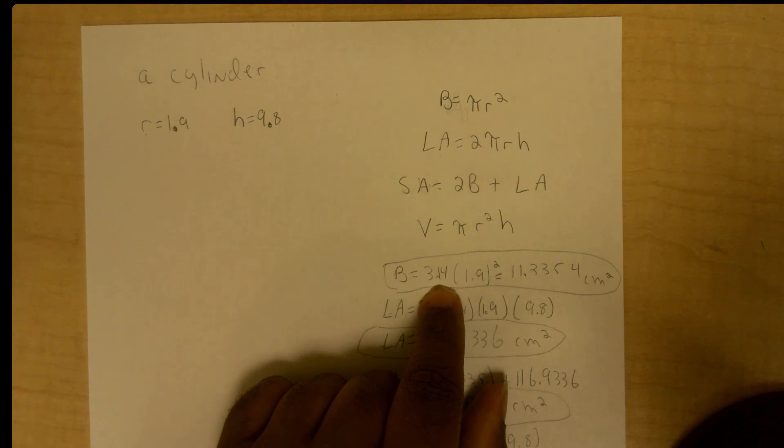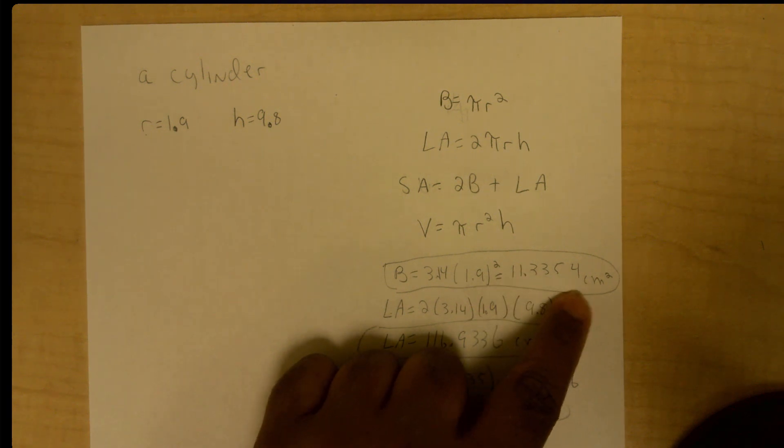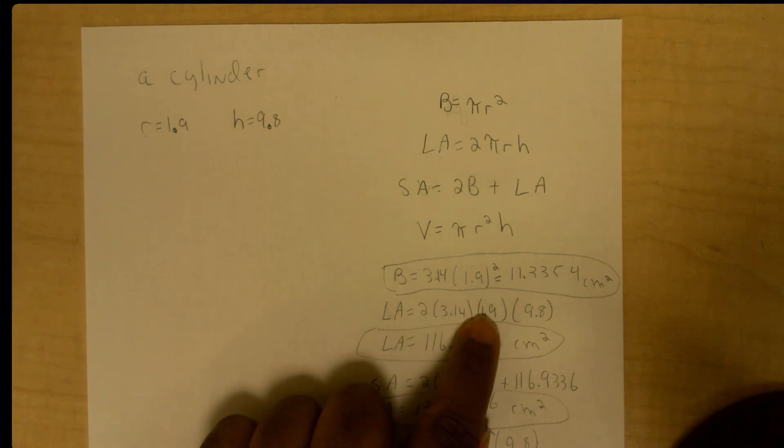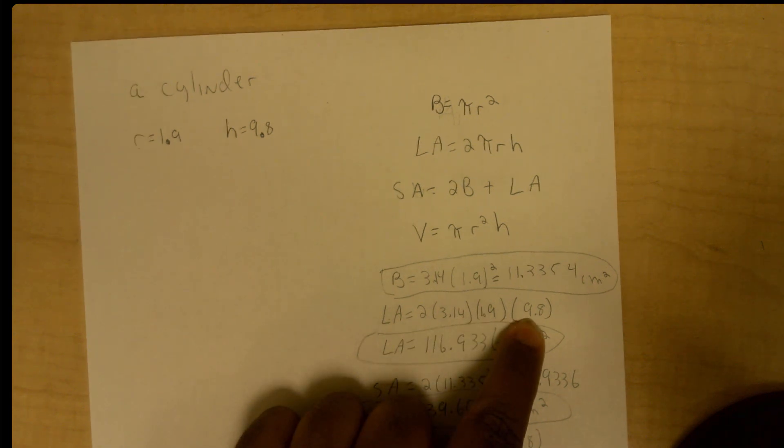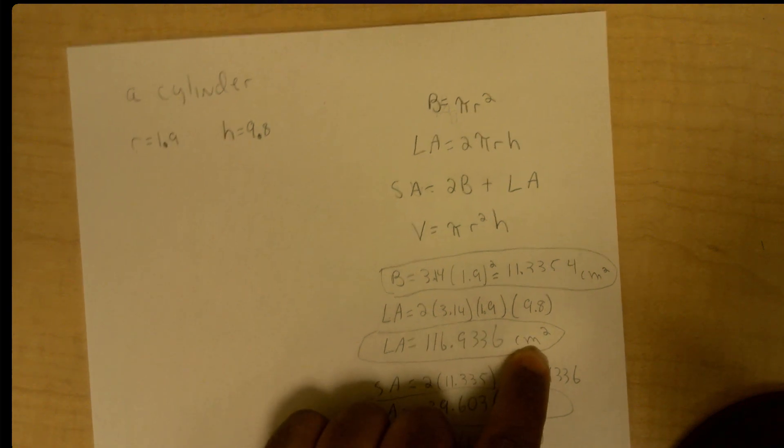So I have 3.14 times r squared, with r being 1.9, which gives me the area of one base in centimeters squared. Then I found my lateral area, which is 2 pi r h, and that gives me my lateral area in centimeters squared.